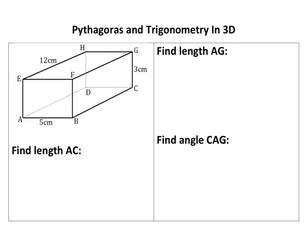We're looking at Pythagoras and Trigonometry in 3D, so I've got a question here with three different parts, hopefully covers pretty much everything. I've got a cuboid here, to be honest you'll normally have prisms.